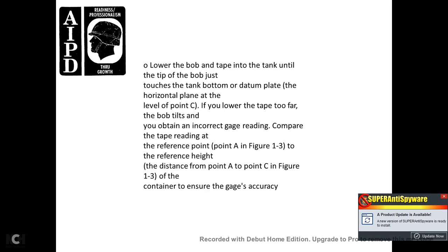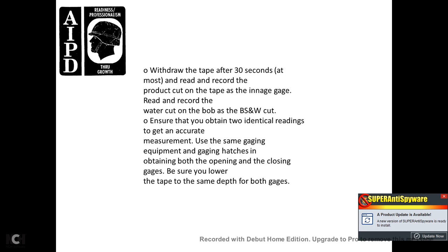Lower the bob and tape into the tank until the tip of the bob just touches the tank bottom or datum plate. If you lower the tape too far and the bob tilts, you will obtain an incorrect reading. Compare the tape reading at the reference point A in Figure 13 to reference point H to ensure gauge accuracy. Withdraw the tape after 30 seconds, then read and record the product tape cut as the ingage reading. Read and record the water cut on the bob as the bottom sediment and water cut. Obtain identical readings to ensure accurate measurement, using the same tape and bob for opening and closing gauges, and be sure to lower the tape to the same depth on both gauges.